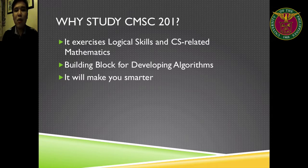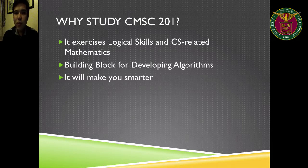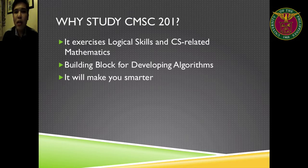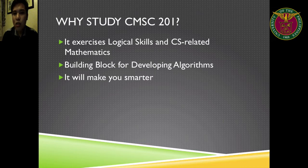Before everything else, I want you to think about why we study CommSci 201. What is the importance of this subject? Why not go straight to programming? Well, a good reason would be logical skills. In order for you to create good programs or solve problems using computers, you need to be logical thinkers. So this subject will actually train you how to be logical thinkers. At the same time, it will give you some knowledge on computer science related mathematics.